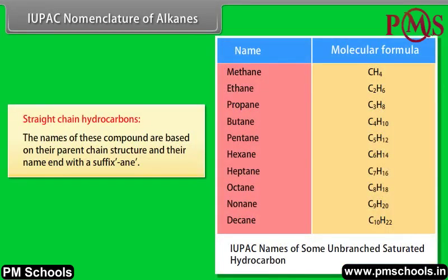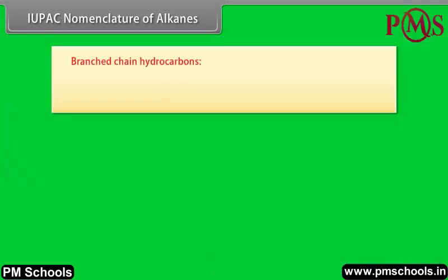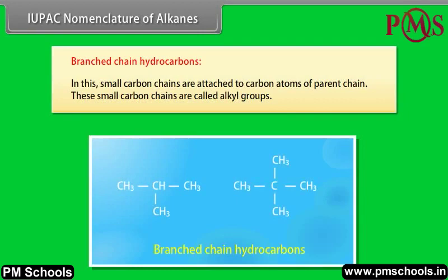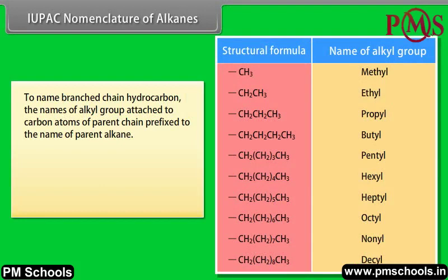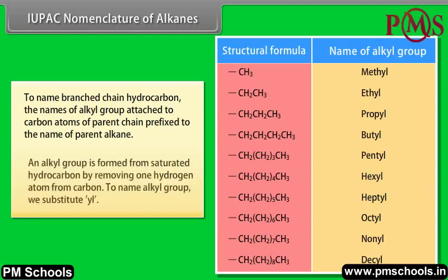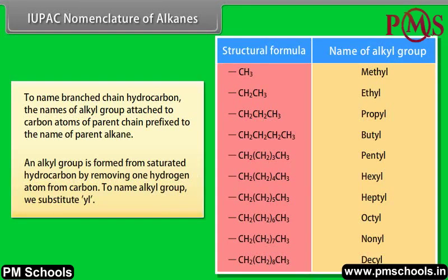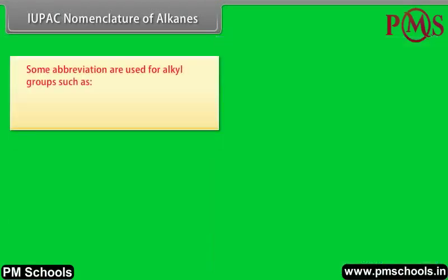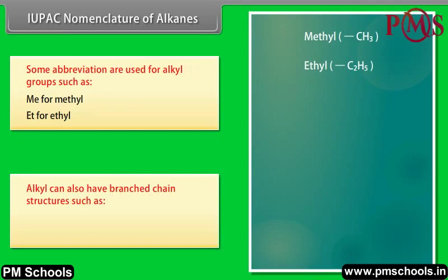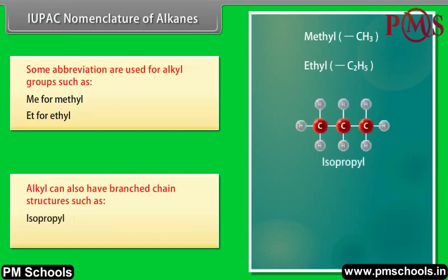IUPAC nomenclature of alkanes. Straight chain hydrocarbons: the names are based on their parent chain structure and end with the suffix -ane. Branched chain hydrocarbons: small carbon chains are attached to carbon atoms of the parent chain and are called alkyl groups. An alkyl group is formed from a saturated hydrocarbon by removing one hydrogen atom. To name an alkyl group, we substitute -yl. Abbreviations such as Me for methyl and Et for ethyl are used. Alkyl groups can also have branched chain structures such as isopropyl and tert-butyl.